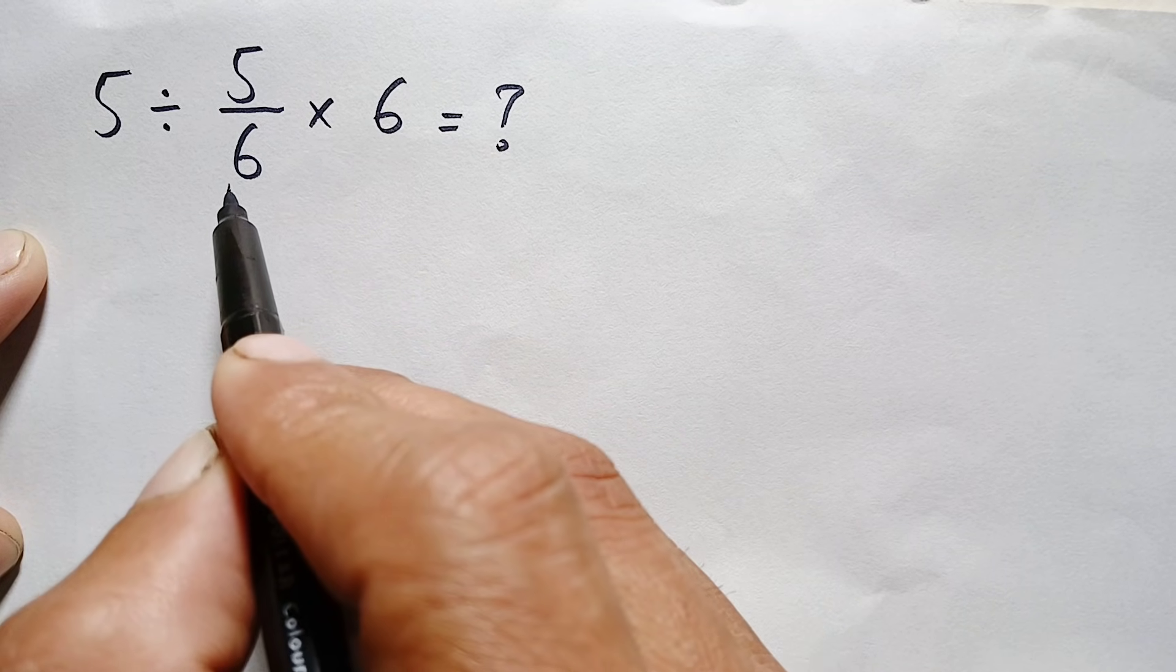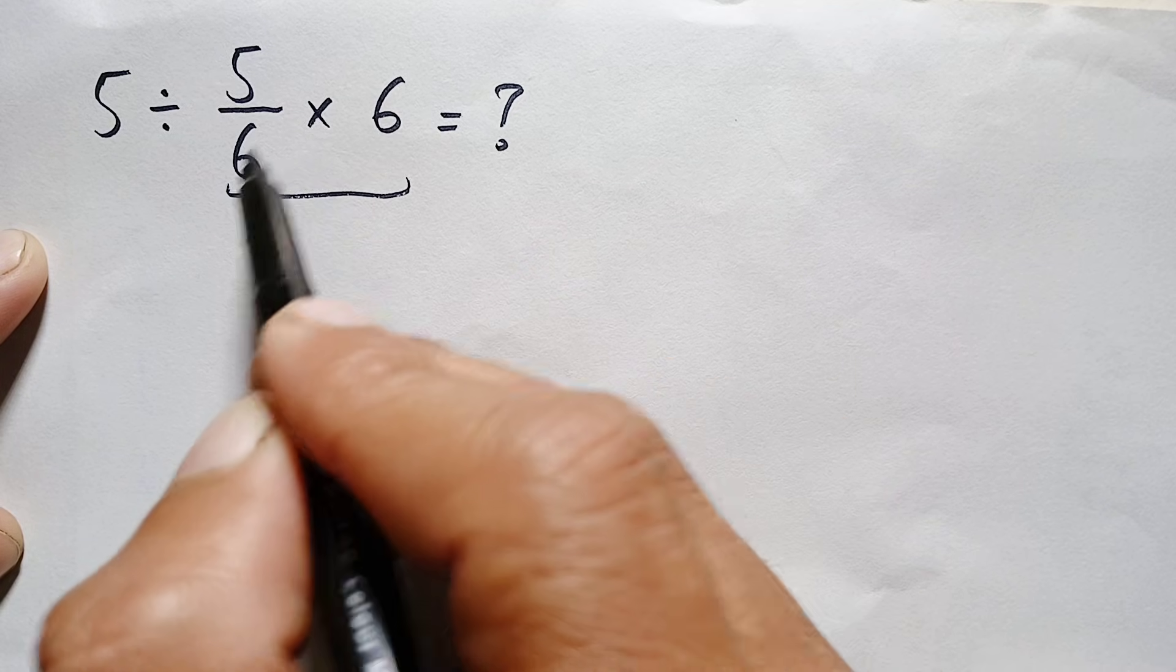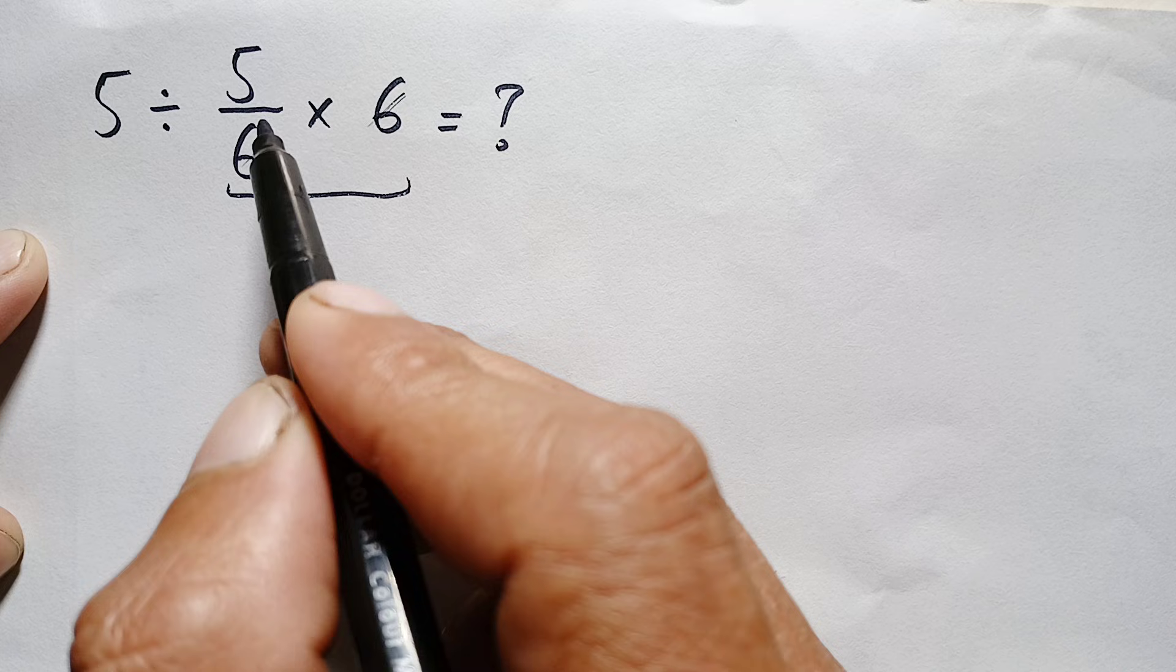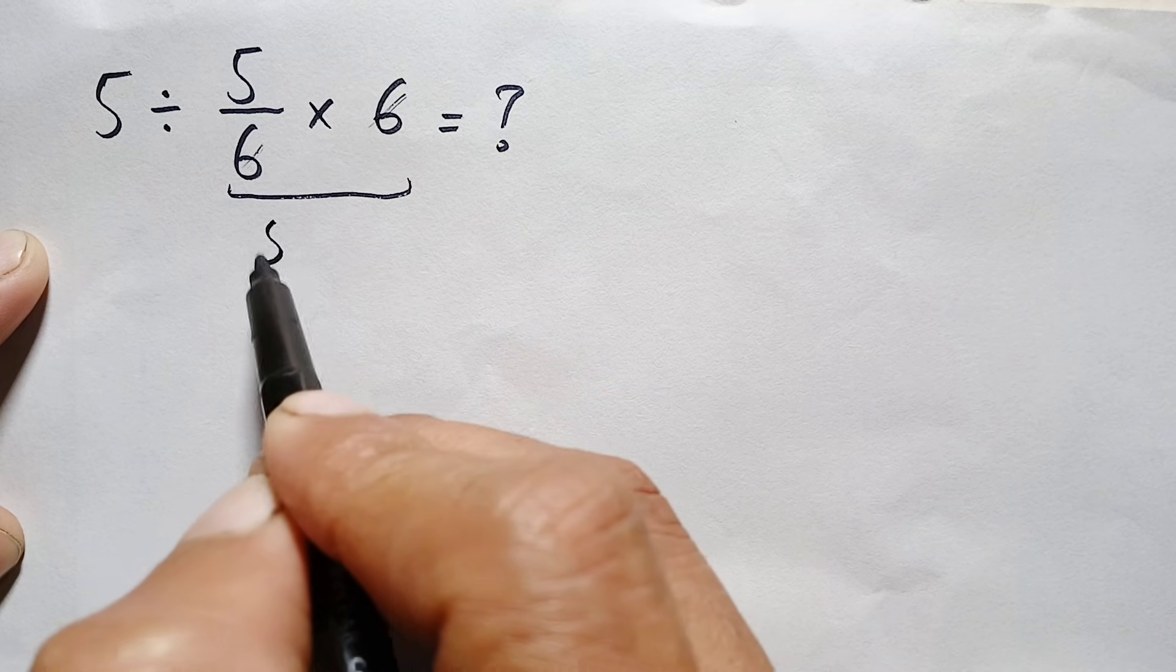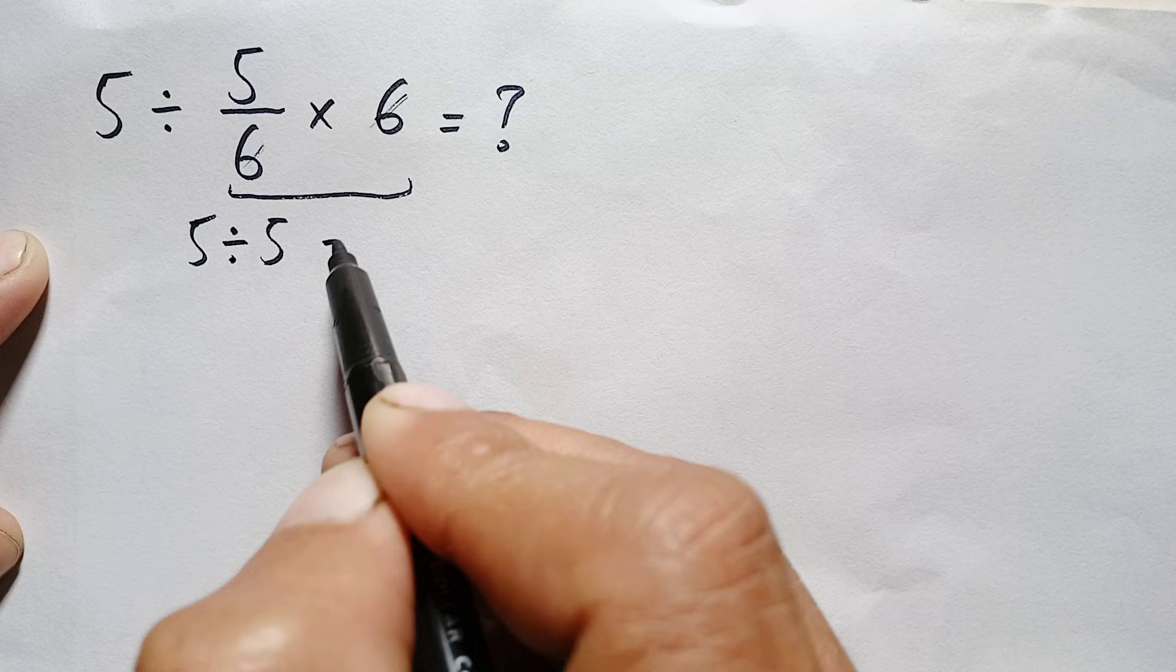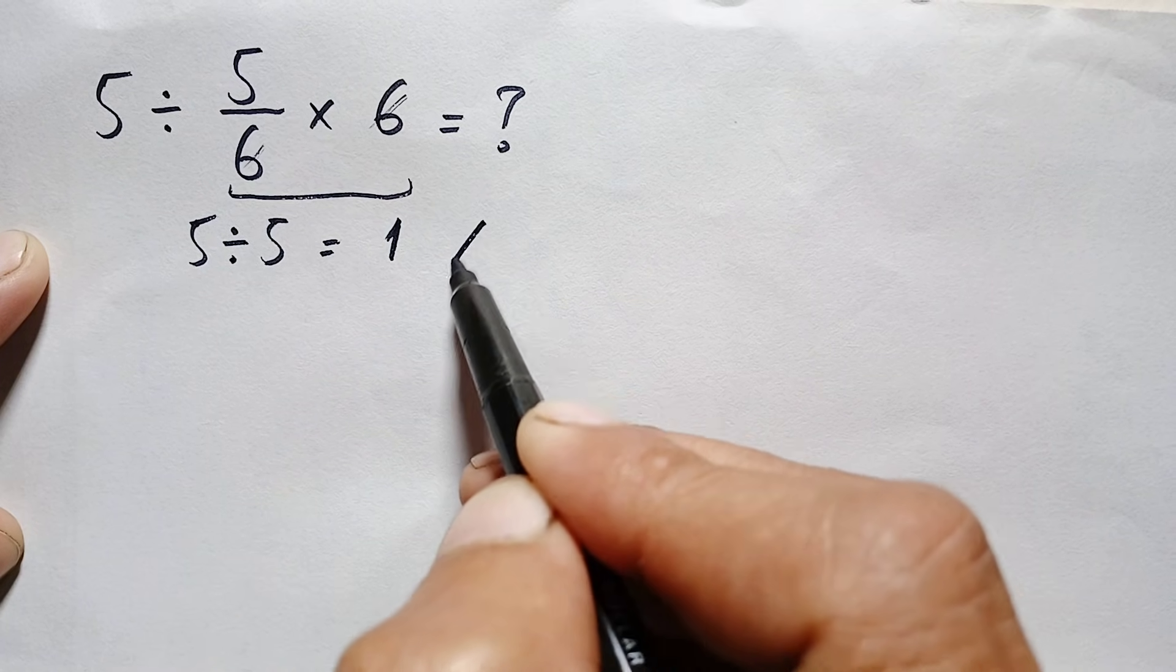Here, 5/6 times 6 - we can simply cancel 6 with 6. Dividing 6 with 6 gives us 1, and 5 times 1 is 5. So this gives us 5, and dividing 5 by 5 gives us 1. Here 1 is our answer.